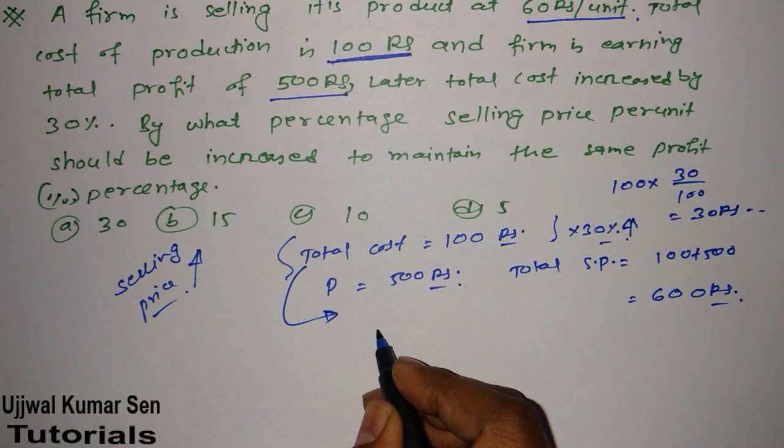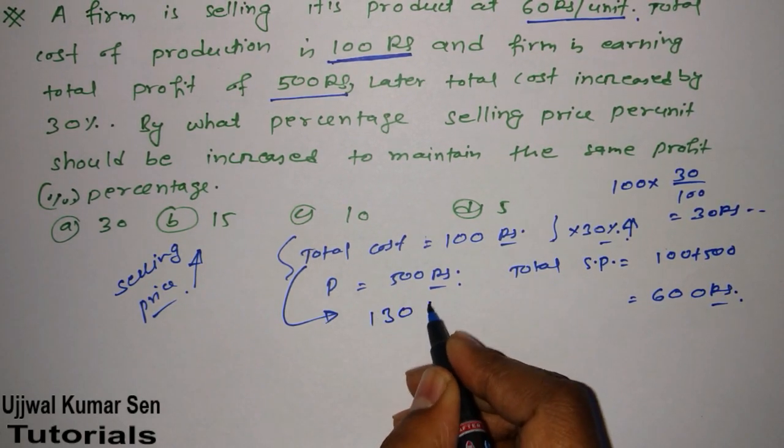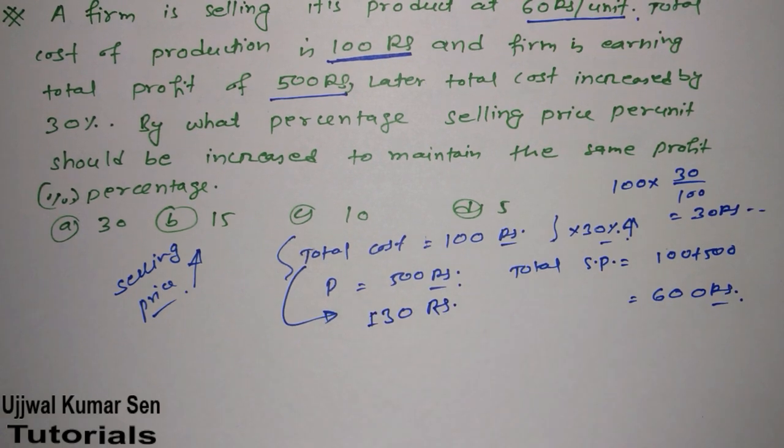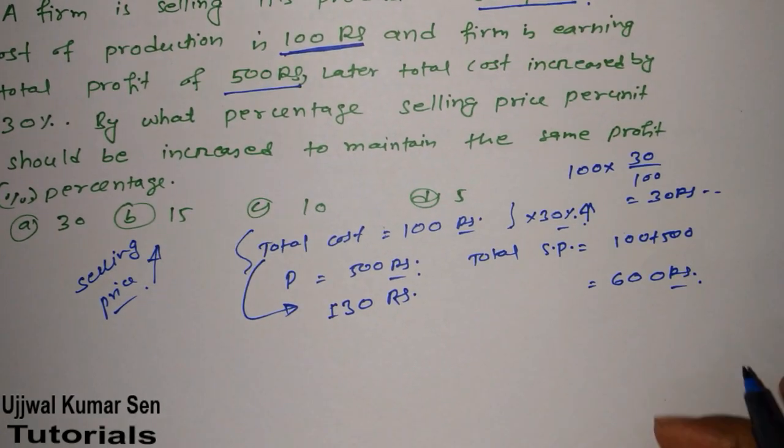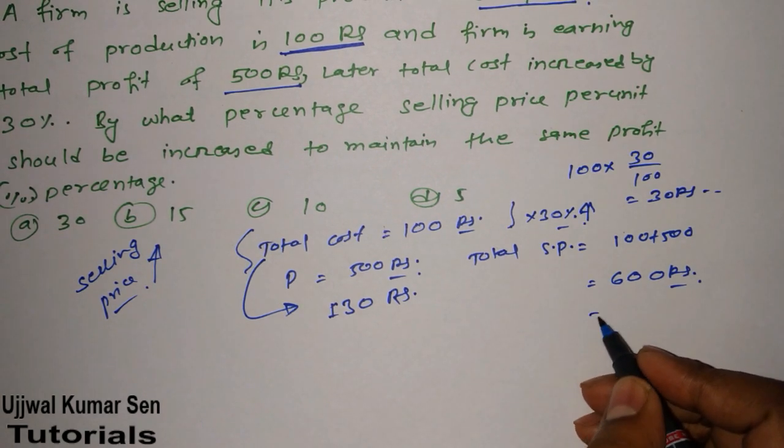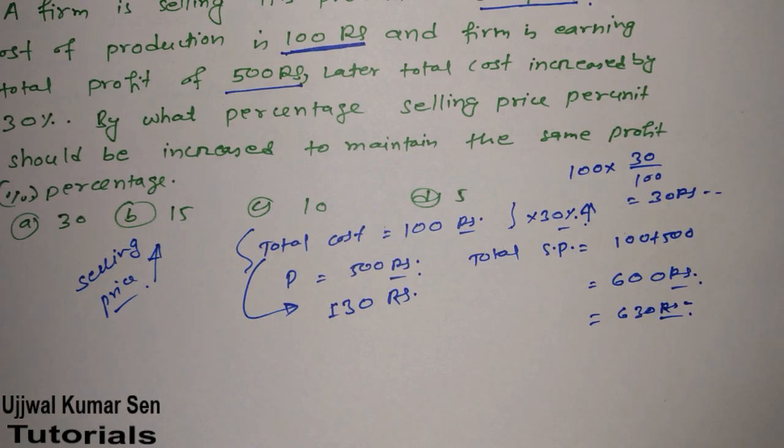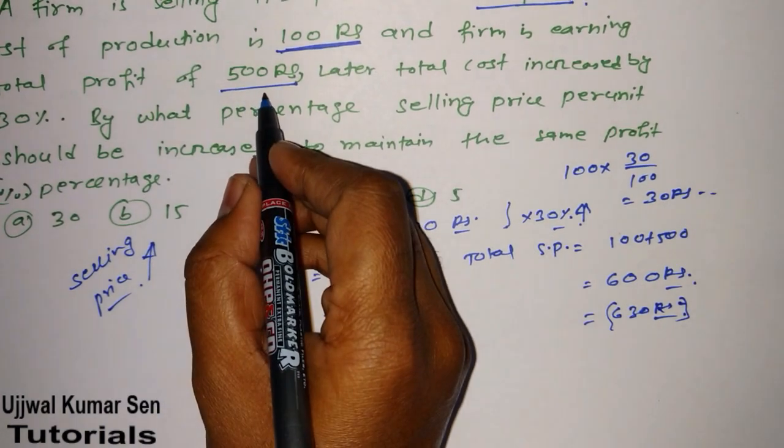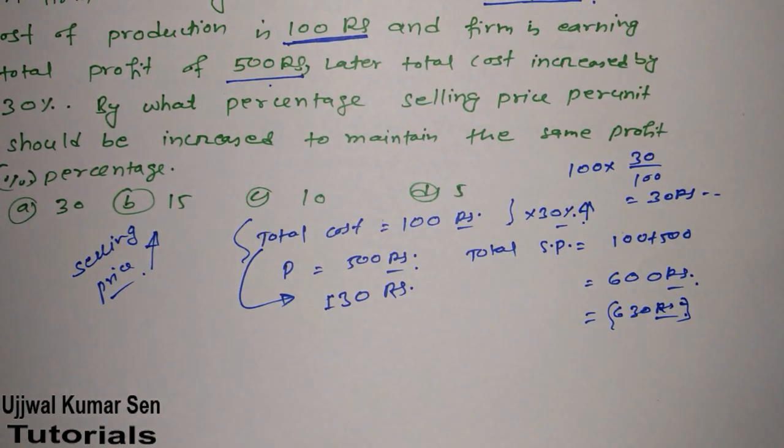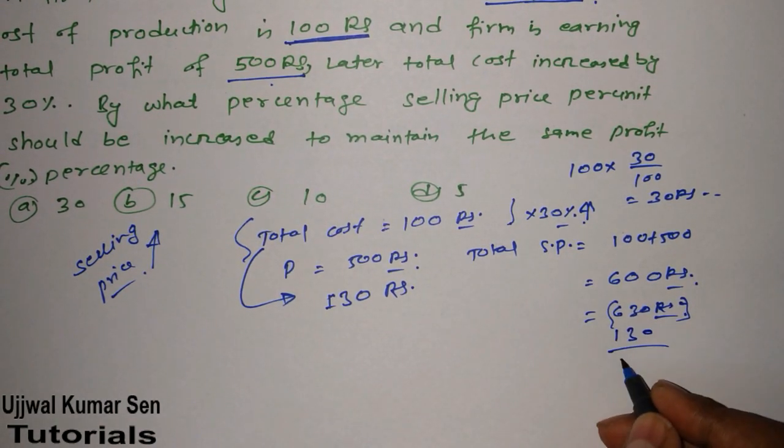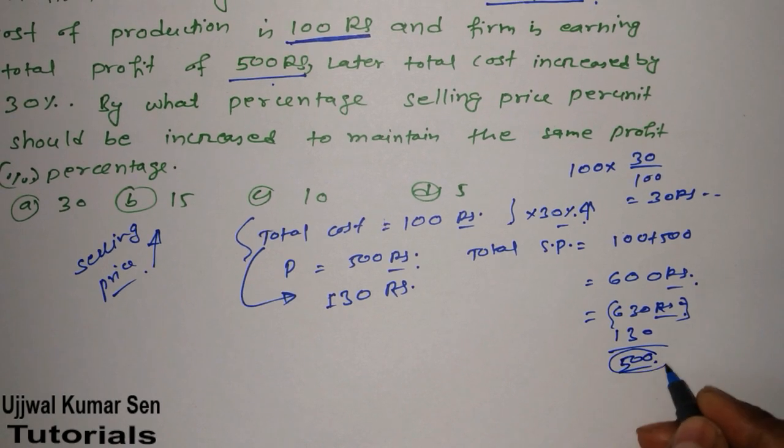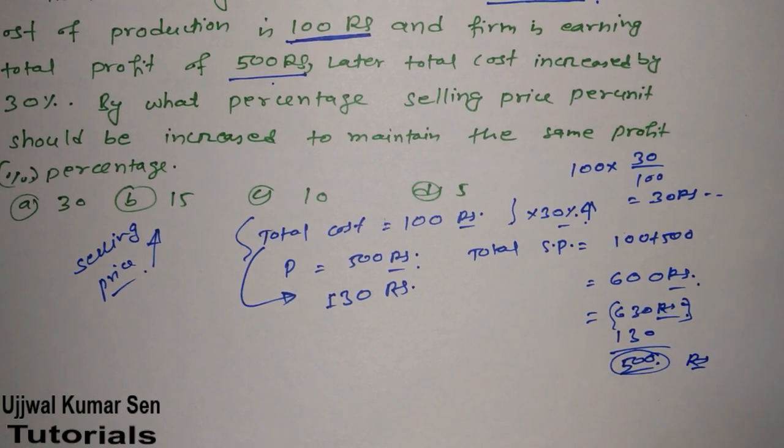So now total cost is 130 rupees. Now the total selling price should be 630 rupees, so that we'll get the same profit. If I minus 130 from here, I will get 500 rupees profit. Now what percentage we have increased, we need to find out.